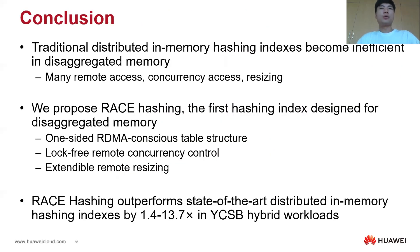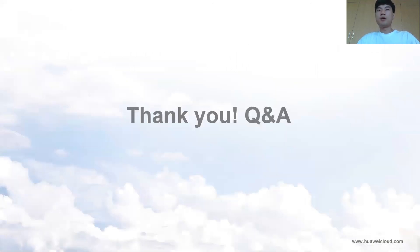Finally, to conclude: traditional distributed in-memory hashing indexes become inefficient in disaggregated memory. We propose RACE hashing, the first hash index designed specifically for disaggregated memory. Our experimental results show that RACE hashing outperforms state-of-the-art distributed in-memory hashing indexes by up to 30 times on YCSB hybrid workload. Thank you for listening.